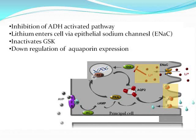The second way lithium decreases aquaporins is by reducing aquaporin gene transcription. Lithium enters the principal cell by using epithelial sodium channels, ENaC, then inhibits GSK, which downregulates aquaporin gene expression, leading to decreased production of aquaporins. AVP, another name for ADH, is produced in the pituitary gland and stimulates the production of aquaporins. Therefore, lithium inhibits pathways activated by ADH.